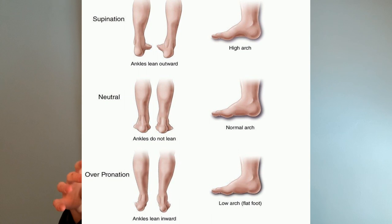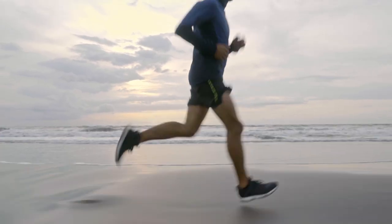Similar to somebody with a supinated foot, the arch of a neutral foot type is going to be on the higher side. As a result, it's going to be a little more tight and not absorb as much shock as somebody with a pronated foot or a lower arch. That's where that micro-tear can form and plantar fasciitis can arise.